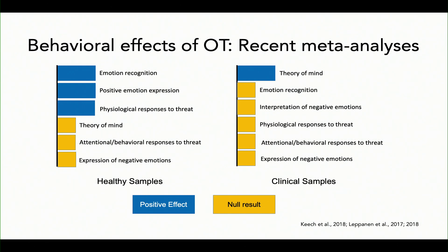That effect in theory of mind is in individuals with schizophrenia and autism spectrum disorders. So why am I showing you this? Because it looks like at the main effect level, there's something going on. It definitely depends on whether you're looking at a clinical sample or a healthy sample, but there are also quite a few null effects. It's important to recognize what we know and what we don't.